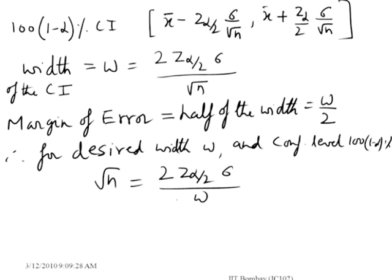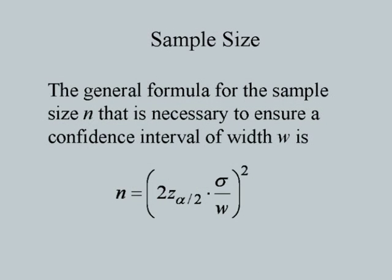For a desired width W and desired confidence level, the required sample size is given by: root n equals 2 z-alpha/2 sigma by W. Therefore the general formula for the sample size n necessary to ensure a confidence level with width W is the square of (2 z-alpha/2 sigma by W). You can always work out the required sample size from this formula.